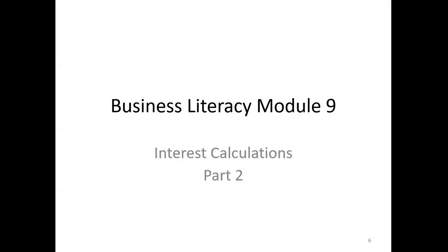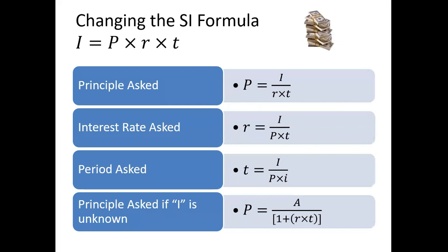We are now going to look at part two of interest calculations. First thing we can be expected is to change the simple interest formula. We have the formula there, the standard formula, I equals P times R times T. Just as a reminder, it means that the interest is equal to the principle multiplied by the rate multiplied by the time.